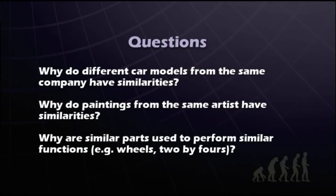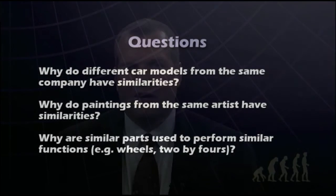What we see in our everyday experience is that when we see these similarities, it's because of a common designer or because the same individual or company is working on what we're looking at. We can ask: why are similar parts used to perform similar functions? Wheels are used when we want to reduce friction and allow something to roll. Two-by-fours can be used to provide structure in many applications. Similarities are not evidence that one thing is turning into another — they are evidence of a common designer, a common creator.